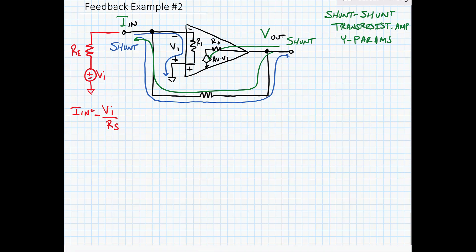Alright, so now we can calculate our network parameters. We're going to calculate Y12 which will equal beta and then we're going to calculate Y11 and Y22 which will be our loading on the network. Now one thing I didn't label the feedback resistor, let's call the feedback resistor RF.